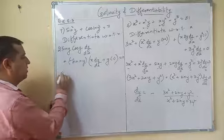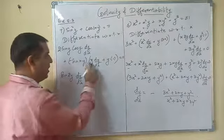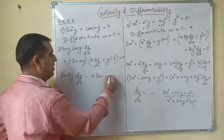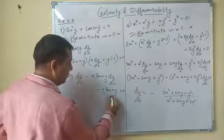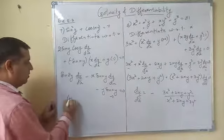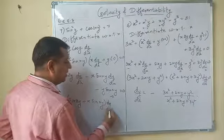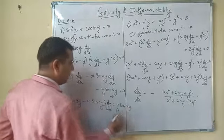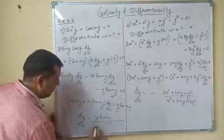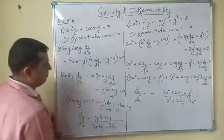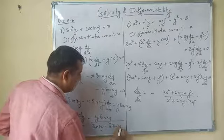Expanding: sin(2y)·(dy/dx) − x·sin(xy)·(dy/dx) − y·sin(xy) = 0. Collecting the dy/dx terms: [sin(2y) − x·sin(xy)]·(dy/dx) = y·sin(xy). Therefore dy/dx = y·sin(xy) / (sin(2y) − x·sin(xy)).